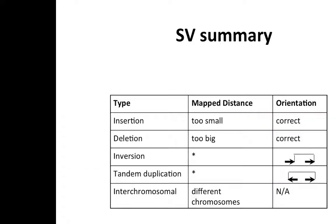To summarize the different structural variation types and their signatures: for insertions and deletions, we expect normal pair orientation but different mapping distances. For inversions, we expect pairs to point in the same direction, with insert size typically quite different from expected. For tandem duplications, we expect pairs to map away from each other with a different insert size. For interchromosomal translocations, one pair maps to one chromosome and the other pair maps to a different chromosome, with orientation that can really be anything.